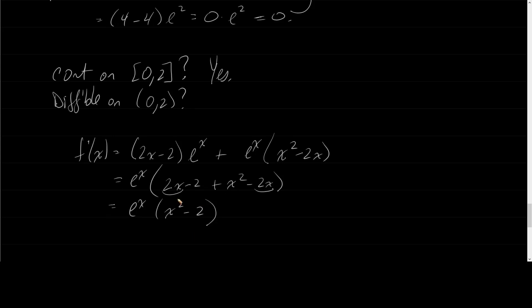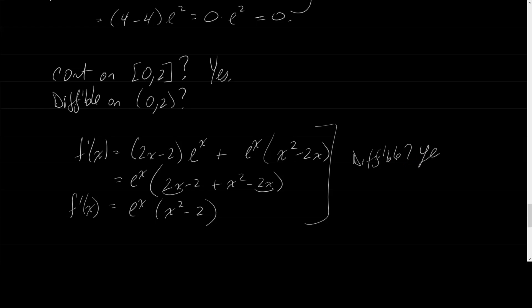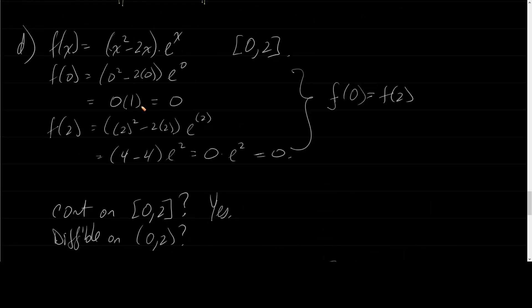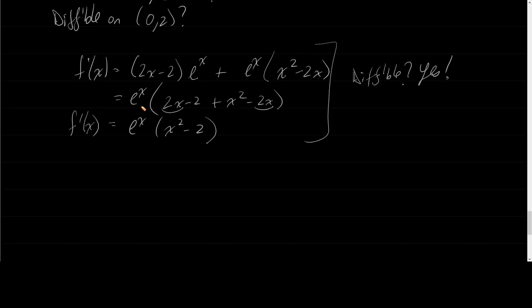Is this differentiable? The domain of x squared minus 2 is all real numbers, and the domain of e to the x is all real numbers, so there's nothing that makes F prime undefined. Therefore it is differentiable everywhere, and thus differentiable on the open interval from 0 to 2. We have continuous, differentiable, and equal endpoints — Rolle's Theorem applies.